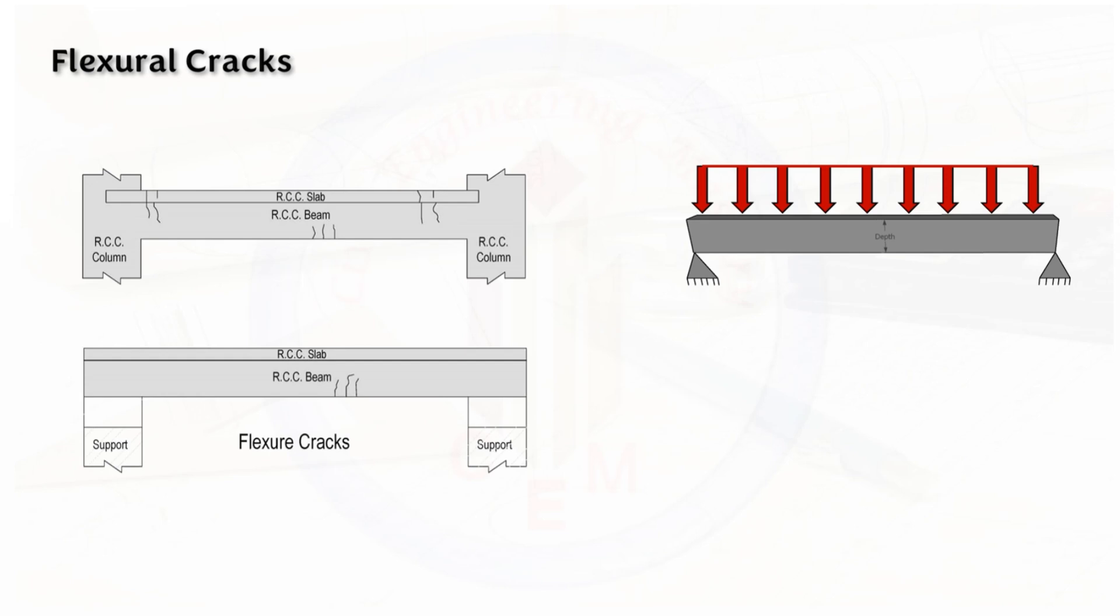Flexural cracks can occur in reinforced concrete beams due to bending stresses. When load is applied on the beam, the beam tends to bend like this. In the beam, top is compression and bottom is tension. Generally, these flexural cracks can occur at the bottom of the beam, that is the tension zone, due to bending stress. These flexural cracks are usually vertical and propagate upwards as the load increases. They are generally closely spaced and evenly distributed.